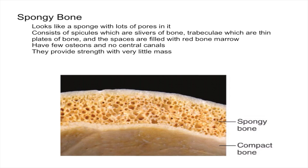Spongy bone consists of things called spicules and trabeculae, and they have spaces filled with red bone marrow. The spicules are just slivers of bone, and the trabeculae are thin plates of bone. Trabeculae is the main functional structure of spongy bone — they are rod-shaped and they provide support, as you can see in the diagram.